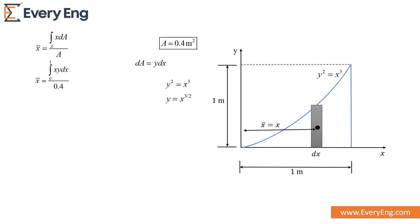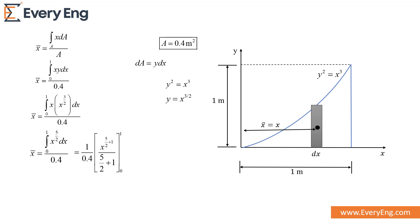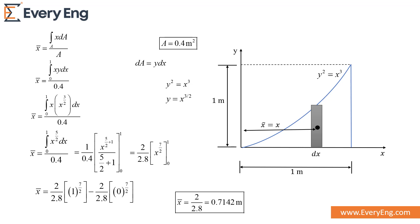Putting the values of y and x into the centroid equation and integrating from 0 to 1, then simplifying and substituting the upper and lower limits, we get the value of the centroid from the y-axis equal to 0.7142 meters.